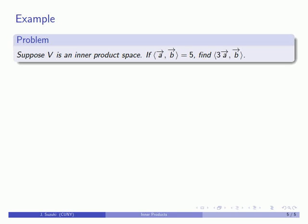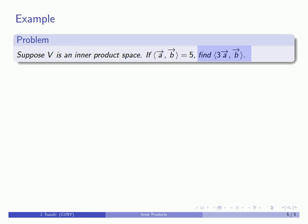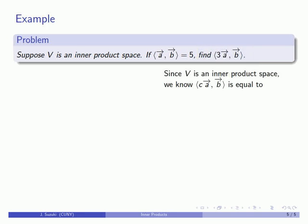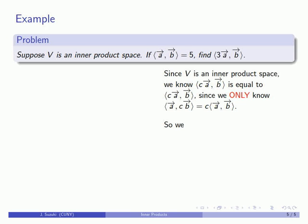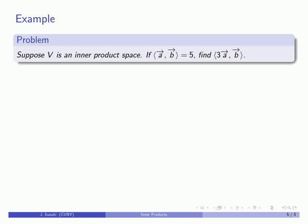Suppose I have an inner product space, and I know that the inner product of a and b is 5, and I want to find another inner product, say, of 3a and b. Well, since we know that V is an inner product space, we know that the inner product of ca and b is equal to c times the inner product of a and b. The only thing we know about inner products and scalar multiples is where we're taking a scalar multiple of the second vector, so we have to try something else.